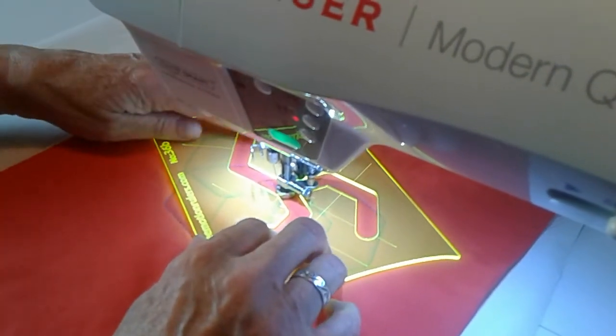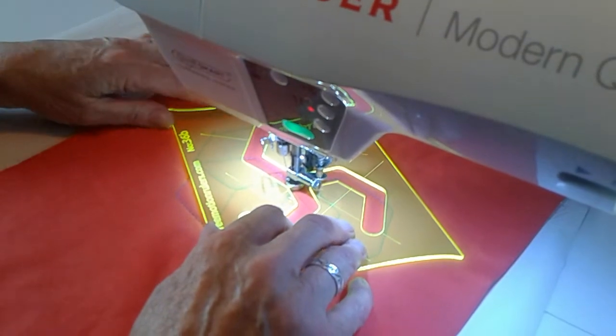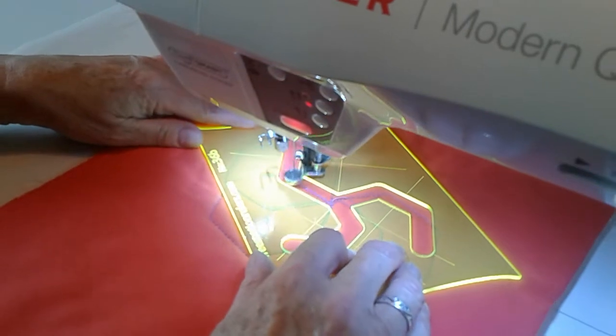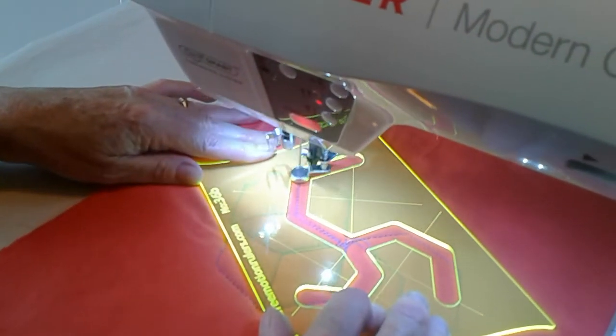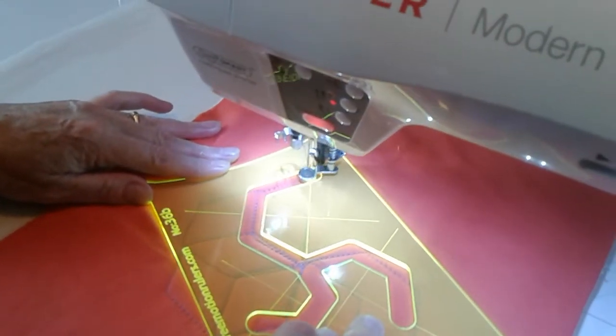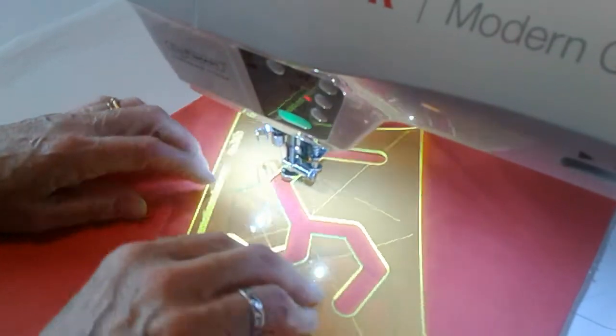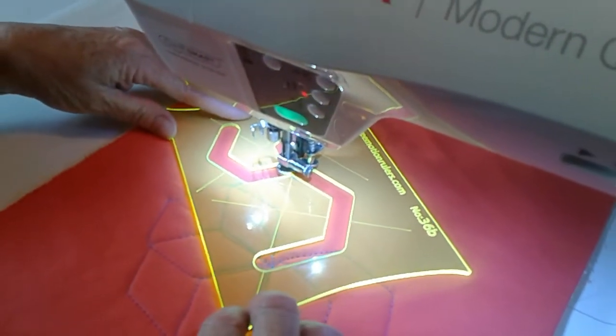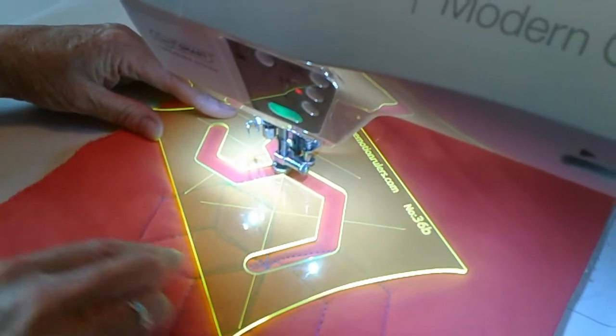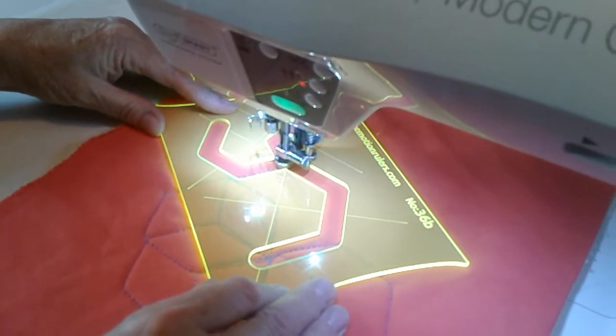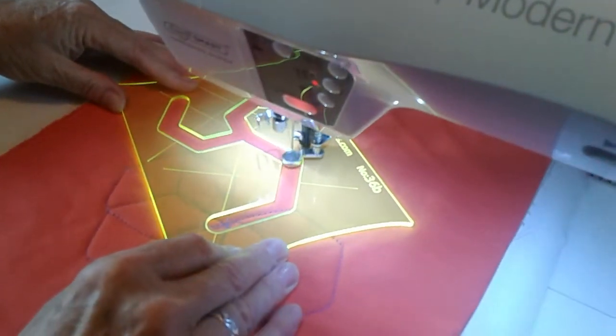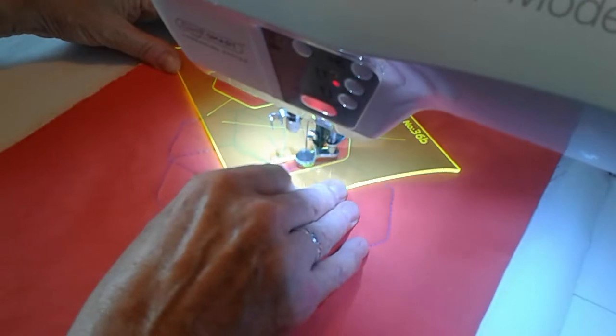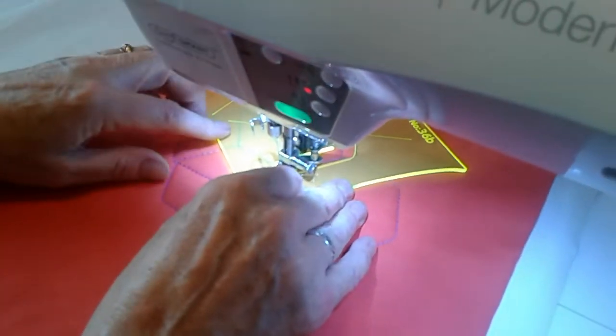Turn, put your cross hairs on the first available corner and we're going to be overstitching that line. Turn, cross hairs on, stitching to center and the last turn.